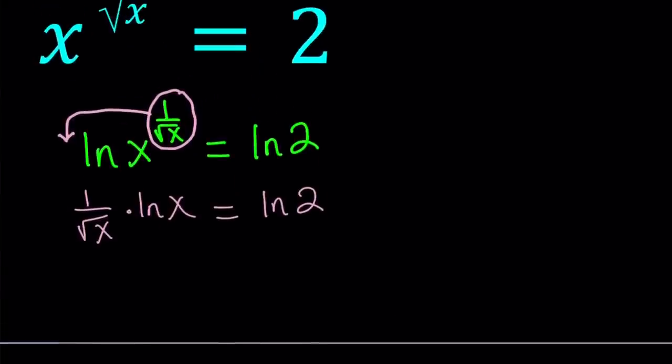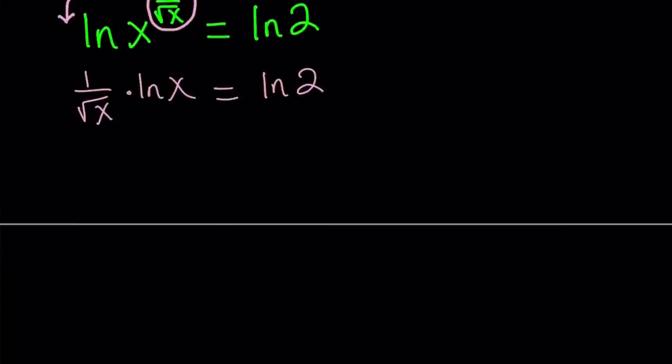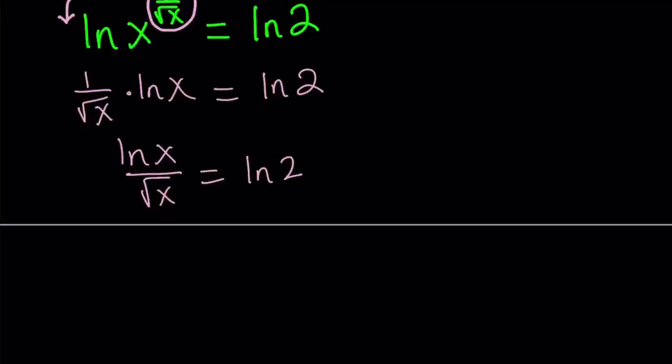Now, we're going to write it as a quotient and write this as LN x over square root of x equals LN 2. Quite a few things can be done at this point. You can put the LNs on the same side, use change of base, so on and so forth. But that's not my goal. I want to get an equation where I have F of A equals F of B, and then from here I'm going to conclude that A equals B.